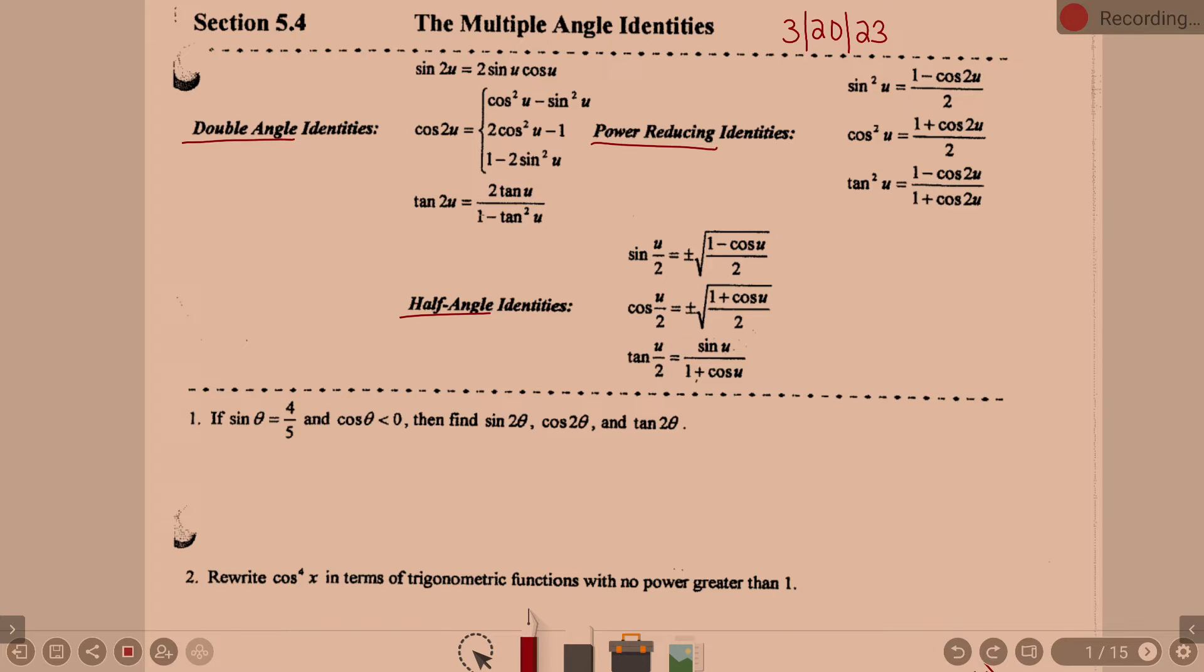Half angle identities, you'll notice half angles, it's the variable divided by 2. Okay, these are all identities we can use to substitute out in certain situations. And we're going to practice using all of these somehow or another at the bottom, okay?